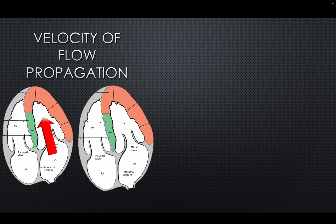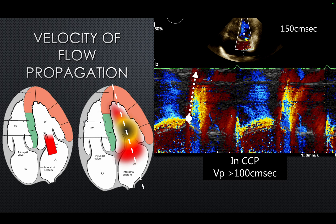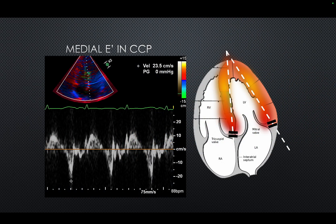Velocity propagation reflects the rapid suction of blood into the LV. When you do a velocity propagation assessment from the annulus to four centimeters above toward the apex, the velocities are actually increased because of the very rapid movement of blood from LA to LV. In CCP, if velocity propagation is more than 100 cm/s it is quite characteristic — in this patient it was 150 cm/s.